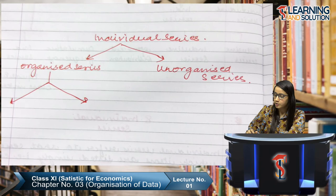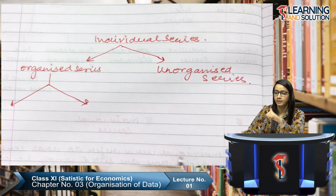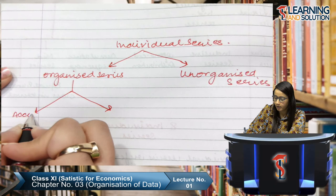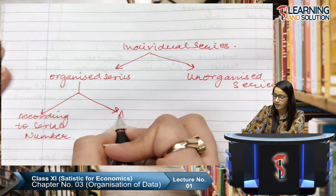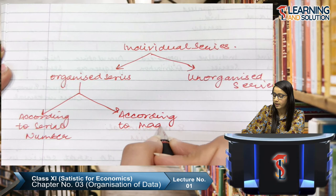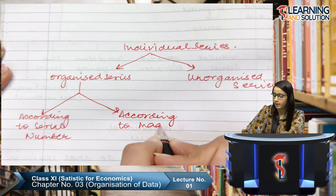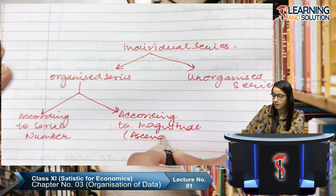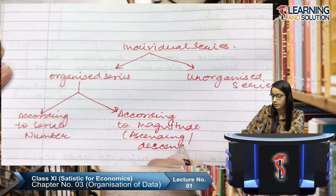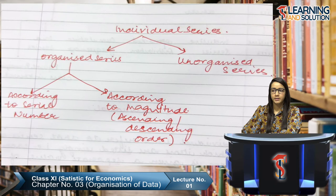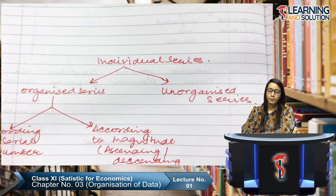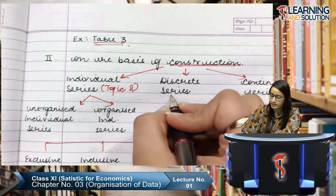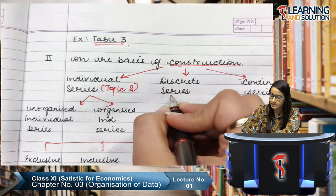In organized series, data can be presented according to serial number or according to magnitude — that is, ascending or descending order. We have covered individual series today. In the next class, we will start with discrete series (Topic 9), and we will most probably also cover the practical examples for this chapter. That's where we'll end today's class.